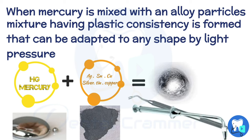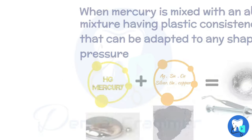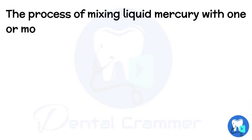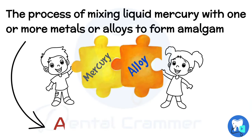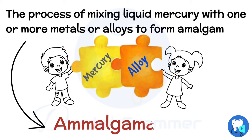During this phase, metal particles co-exist with liquid mercury, giving the mixture a plastic consistency. Due to this, amalgam can be adapted to any shape by using light pressure with the help of a condenser. The process of mixing liquid mercury with one or more metals or alloys to form an amalgam is referred to as amalgamation.